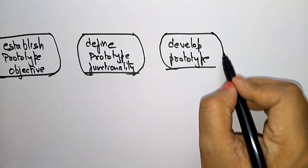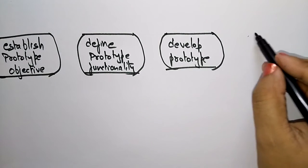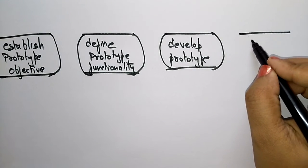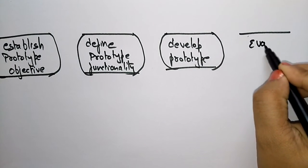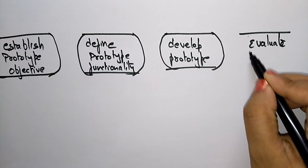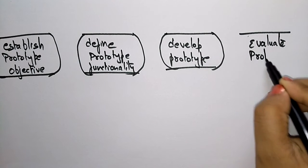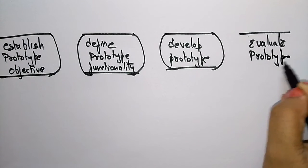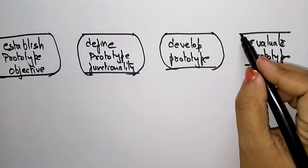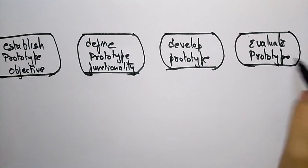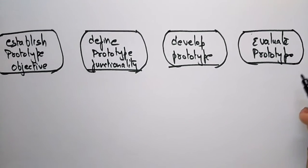Here I am representing the different phases of the prototype in the form of a pictorial representation. The diagram shows: establish prototype objective, define prototype functionality, develop prototype, and evaluate prototype.